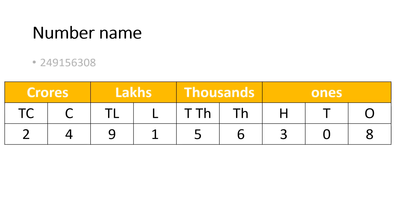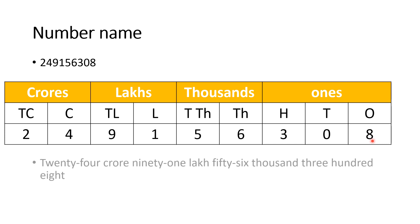Here is your next question. I have written this number in the place value chart. How will we read it? 24 crore, 91 lakh, 56,308. So it is your number name: 24 crore, 91 lakh, 56,308.